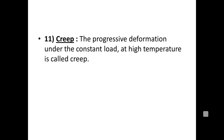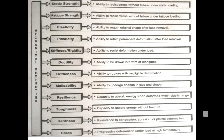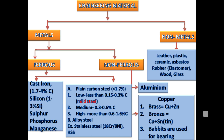Next, creep — a progressive deformation under constant load at high temperature. This property is very useful in case of turbines and high-temperature devices like boilers or furnaces. All the mechanical properties are summarized as: strength, elasticity, plasticity, stiffness or rigidity (important in case of springs, indicating ability to resist deformation), ductility, brittleness, hardness, toughness, resilience, and creep.